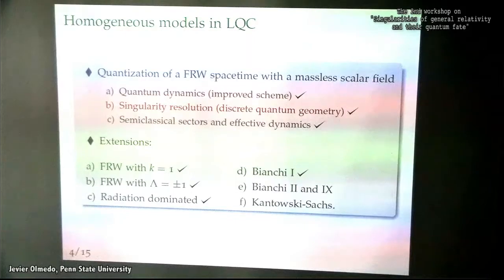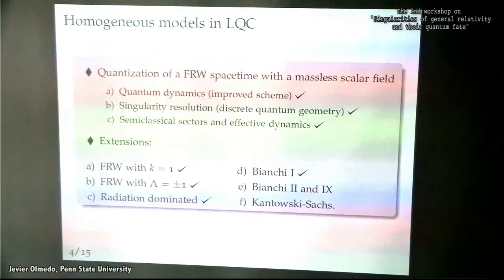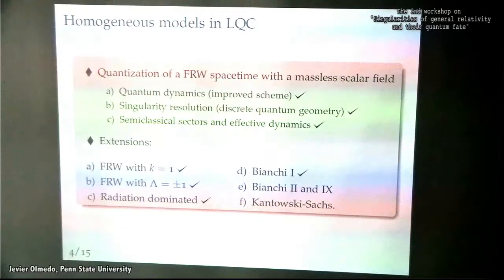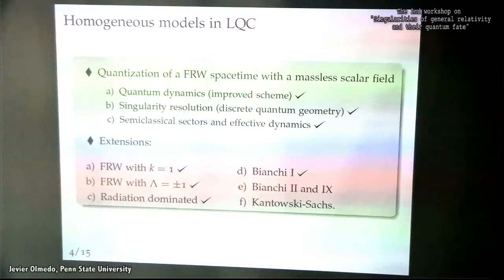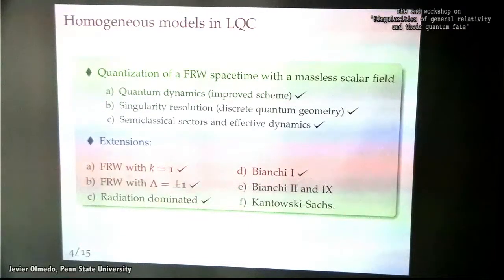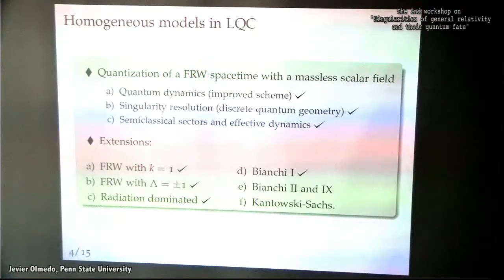All these aspects about dynamics have been studied in several other models — for instance, FRW with positive curvature, when you add a cosmological constant (positive or negative), when you consider other matter content like universes dominated by radiation, and even in an anisotropic cosmological model like Bianchi 1.